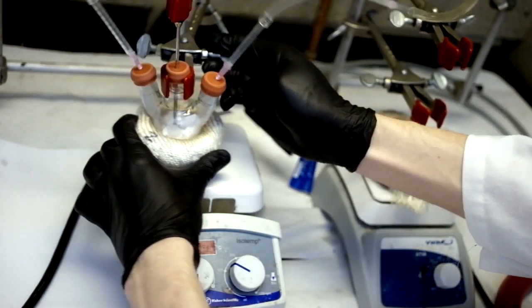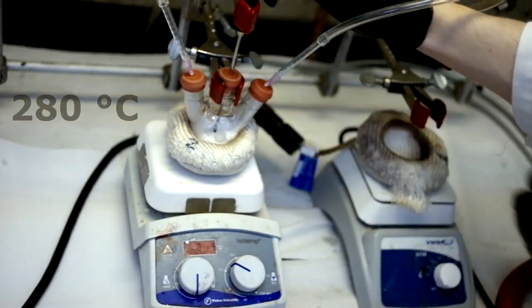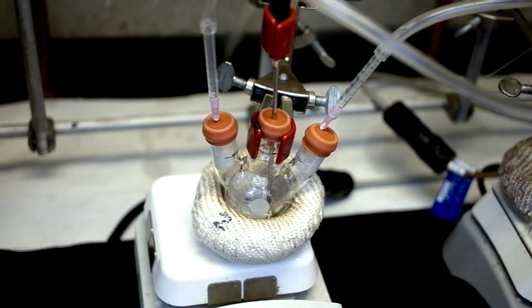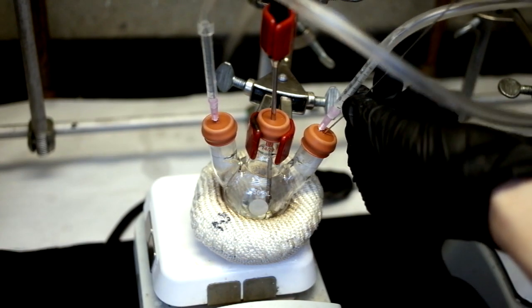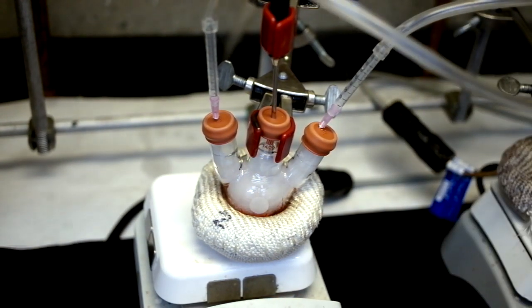Return the flask to the heat mantle and heat the reaction flask to 280 degrees centigrade. After the solution has turned clear in the reaction flask, inject all of your selenium precursor at once. The reaction will begin immediately.